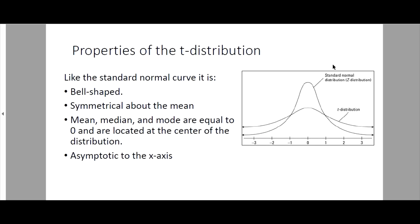What are the properties of the T-distribution? Like the standard normal curve, it is bell-shaped and symmetrical about the mean, meaning the mean is at the center. The mean, median, and mode are equal to 0 and are located at the center of the distribution. It is also asymptotic to the x-axis, meaning it will not touch the x-axis but will just approach it.